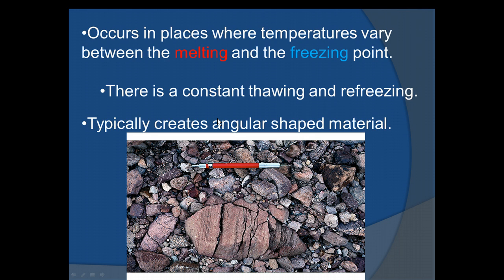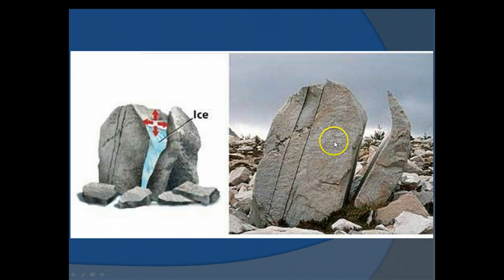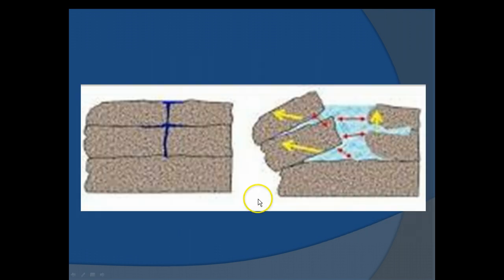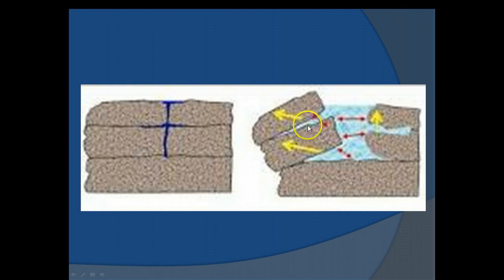With frost wedging you tend to get angular, not rounded rocks — see how straight the lines are. Running water, by contrast, tends to produce rounded rocks. The illustration shows water getting into cracks, freezing, and pushing the rock further apart. On the right is root action — a physical change where roots grow into rock, wedge into cracks, and get larger and larger, breaking the rock apart.